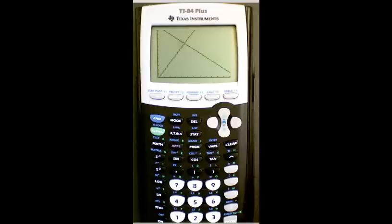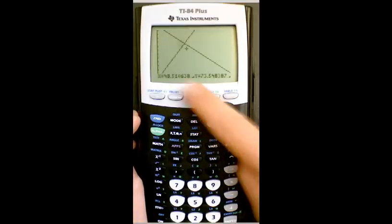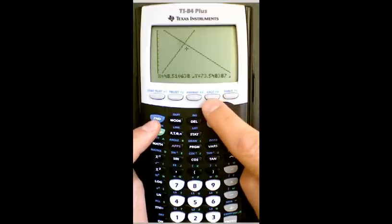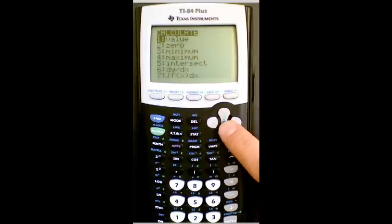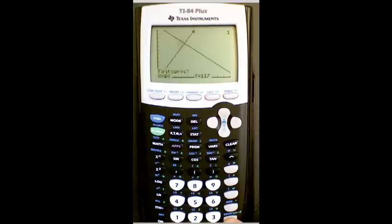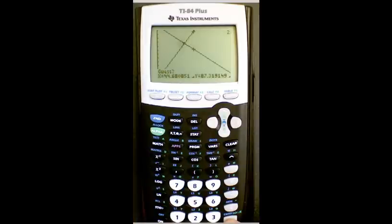Now when we graph it, you'll see an intersection point. You can try to guess where that is using the scroll bar, but calculating it is much better. Use the blue calculate button, select intersection, hit enter for the first curve, the second line, and make a guess. It finds the intersection: x is 45 and y is 87.